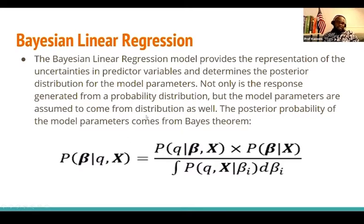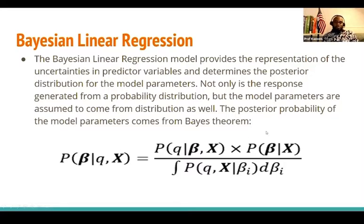In the Bayesian framework, we also assume that the parameters are not fixed. In conventional linear regression the parameters are fixed, but in the Bayesian approach the parameter is actually going to be drawn from a probability distribution.